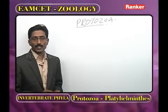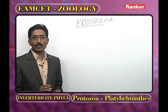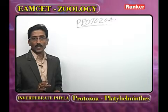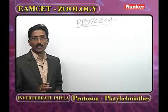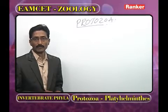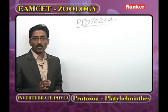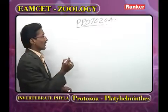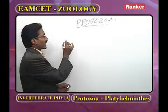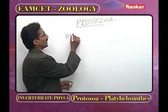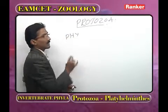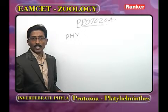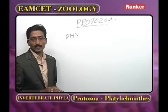In Protozoa, the body is made by one cell, and that one cell performs all activities. The taxonomic position of Protozoa is Phylum. Protozoa belongs to which kingdom? The Protista.